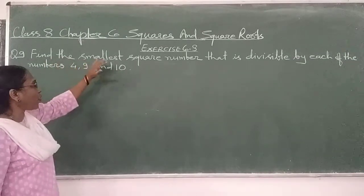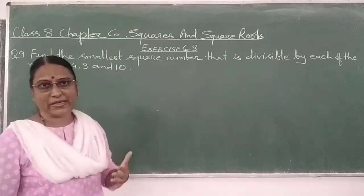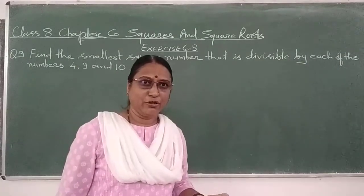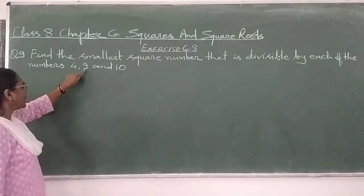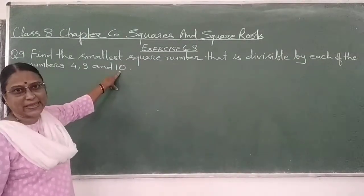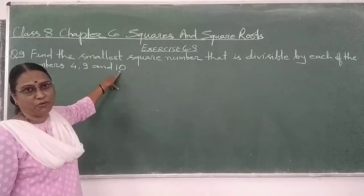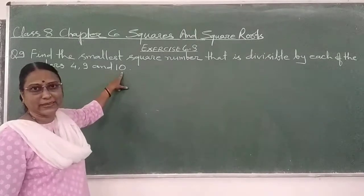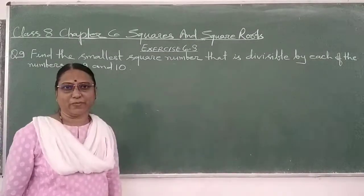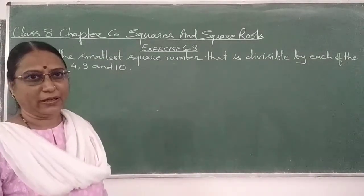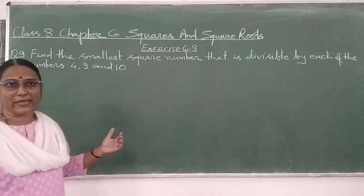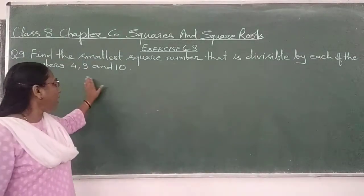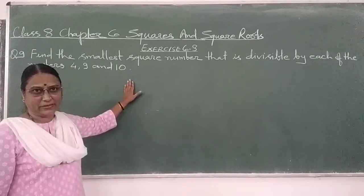We have a smallest square number which is divisible by 4, 9 and 10. As a square number हमको निकालना है. तो सबसे पहले हम ट्रा करेंगे, हम इसता LCM लेंगे. Okay?